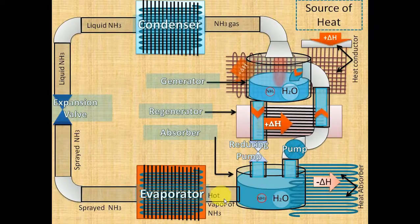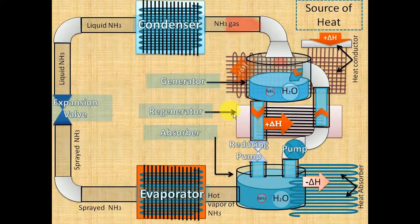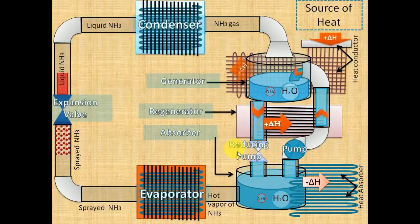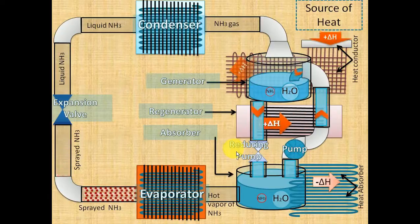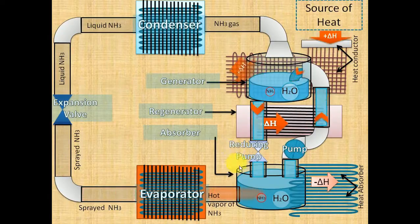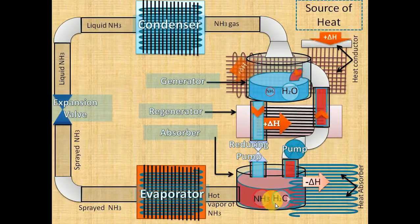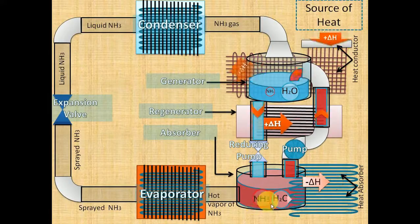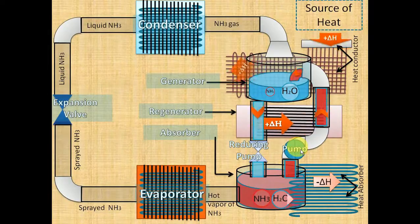I guess you have understood what just happened. Now this solution is releasing a huge amount of heat to the heat absorber. In this solution, the amount of ammonia has raised up. The pump is pulling that solution from absorber to the generator.